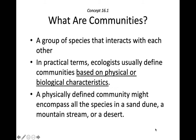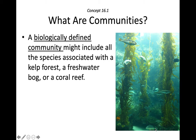A physically defined community might encompass all of the species in a certain physical environment, like a sand dune, a lake, or a stream. A biologically defined community is primarily based instead on its biological characteristics, like the species involved. It uses the presence of abundant species,